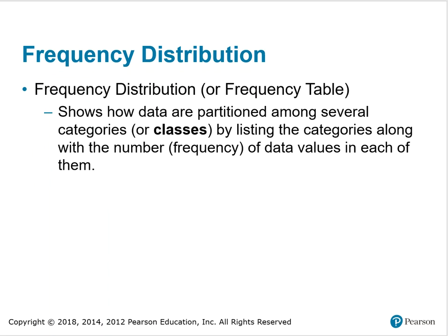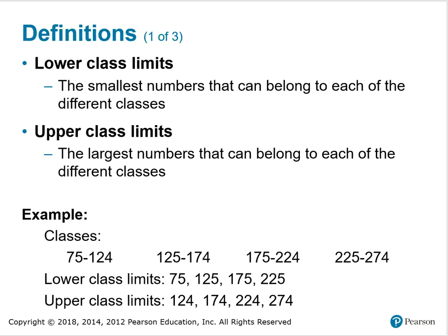A frequency distribution or frequency table shows how data are partitioned among several categories or classes by listing the categories along with the number — which we call the frequency — of data values in each of them. Lower class limits are the smallest numbers that can belong to each of the different classes. Upper class limits are the largest numbers that can belong to each of the different classes.